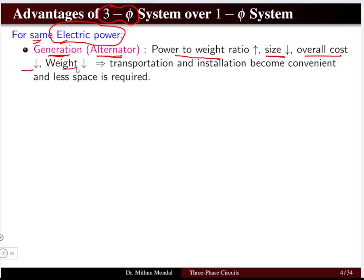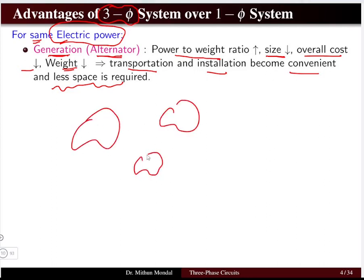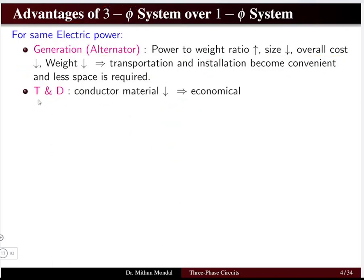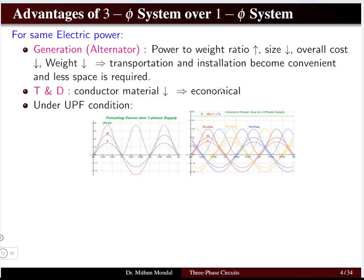Since the size decreases, the overall cost and weight will also decrease. This makes transportation and installation more convenient, and less space is required at the generation end. Multiple three-phase generators at a substation will have less space requirement, less cost, and less weight. In terms of transmission and distribution, less conductor material is required, making it economical with heavy cost reduction.